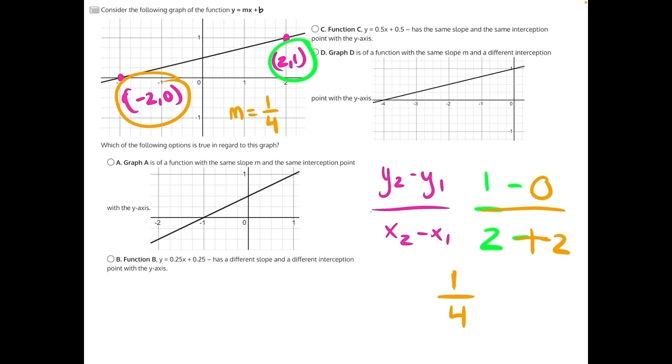If we look at b and c, answer choice b says that this slope is 0.25, or 1 fourth, and that that has a different slope and different interception point than our original function. This interception point right here is at 0.5, which is the same interception point as our original function.